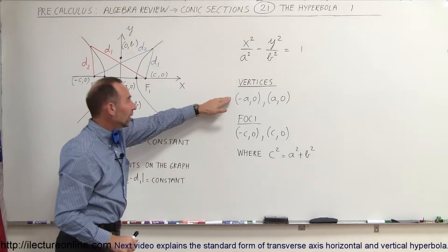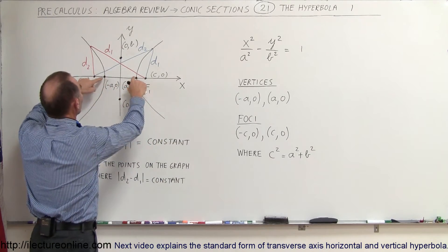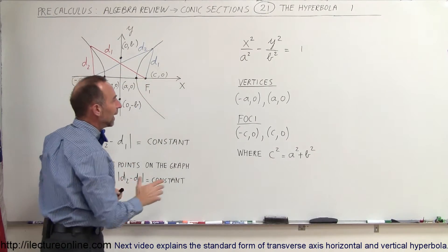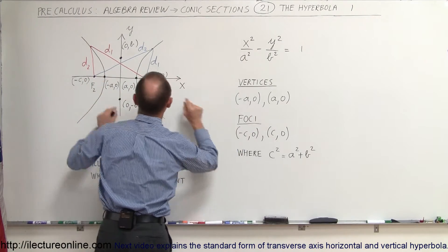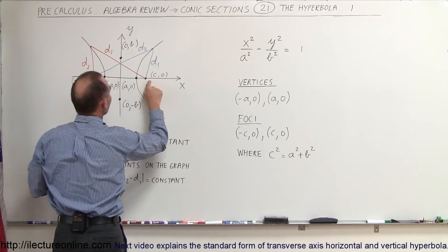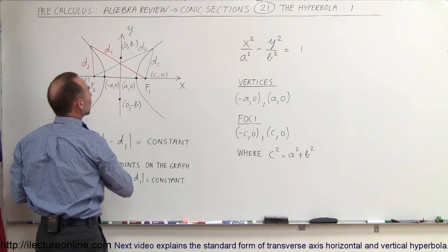So now we know what the vertices are. Those are the two points that are close to the origin on the hyperbola. And the foci are going to be on the right side of the positive focus and on the left side of the negative focus.